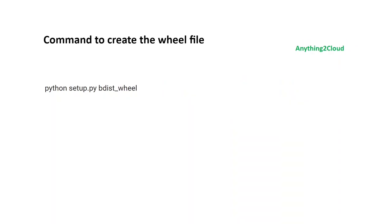In order to create a wheel file, we have to execute the command: python setup.py bdist_wheel. Once you execute this command, your wheel file will be created in a folder called dist. Let us see that in a demo.